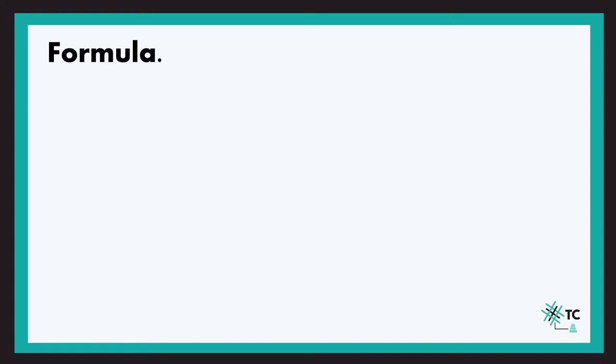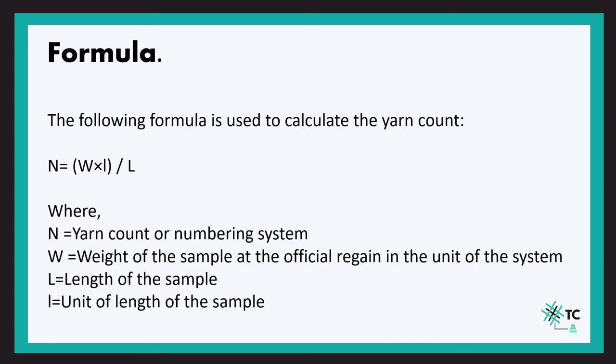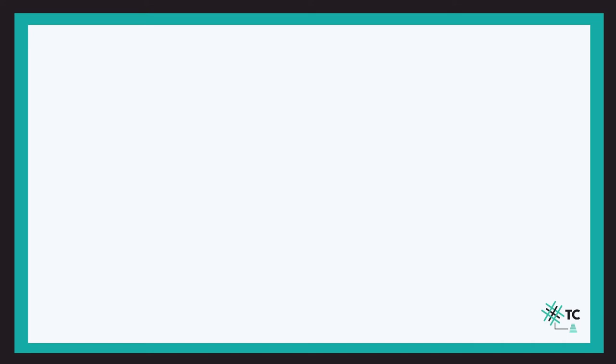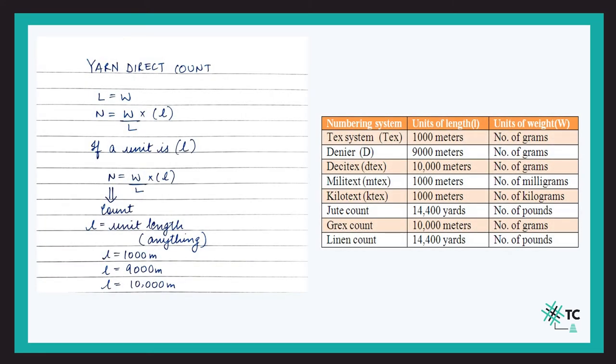Let us now discuss the formula. The formula is: weight of the given yarn divided by the length of the given yarn, multiplied by the unit length. That unit length changes depending on what unit you want — for tex the unit length is 1000 meters, and for denier the unit length is 9000 meters.